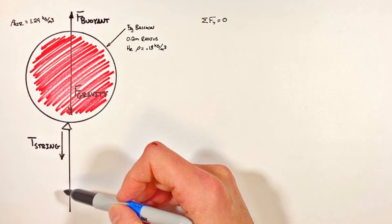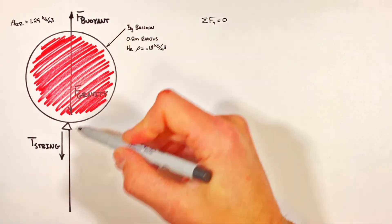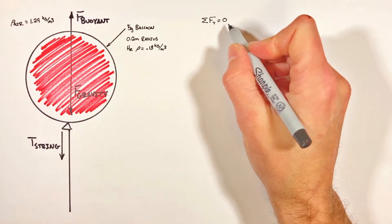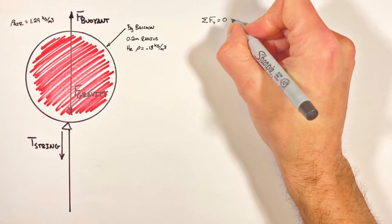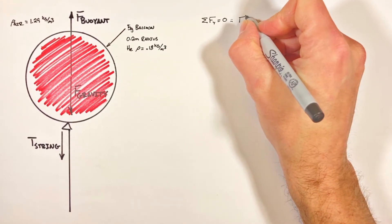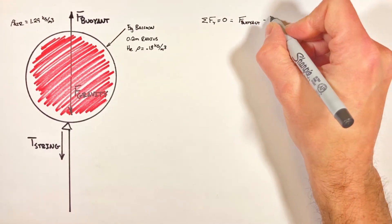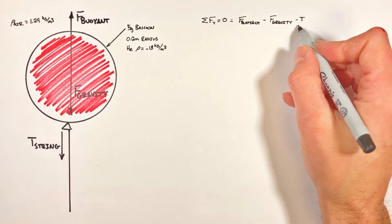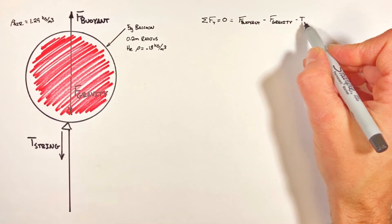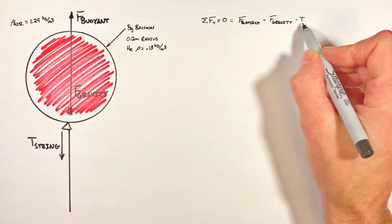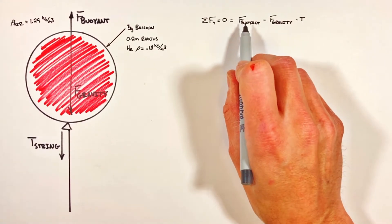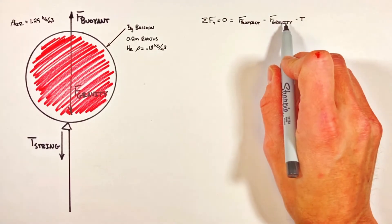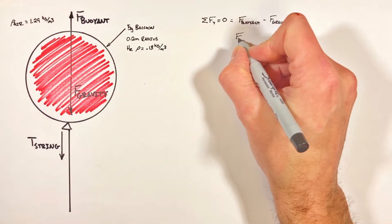Taking each of these forces and putting them into the equation for net force, we see the buoyant force is upward, then gravity and tension are both downward. It's this tension we're trying to solve for, and to do that we need to work out values for both the buoyant force and the force of gravity.